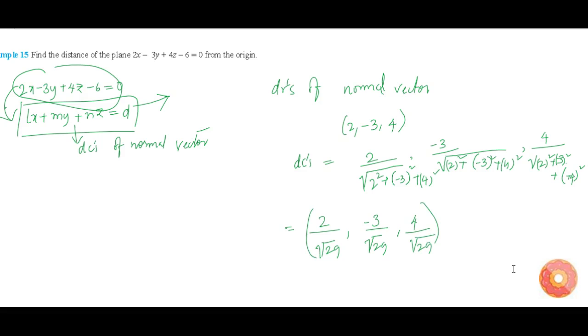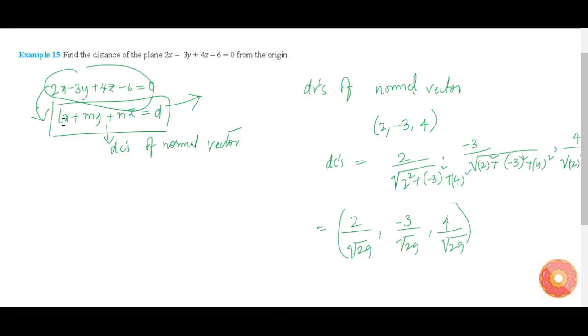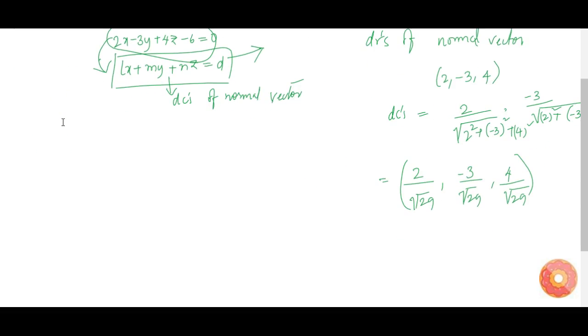Now we know the directional cosines of the normal vector. Let us try to put the Cartesian equation in the form of Lx + My + Nz.